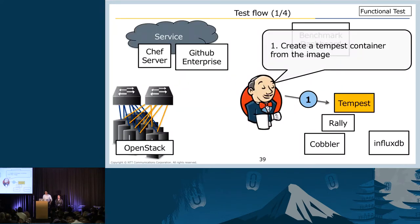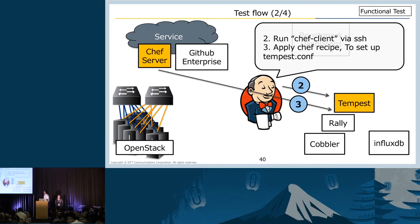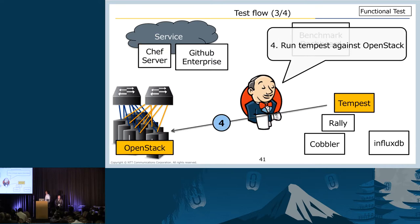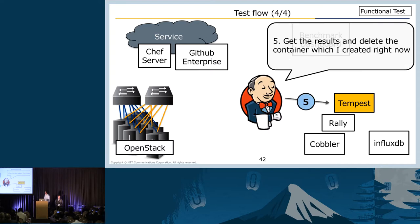Let me explain how we test by showing the flow from start to finish. First, create a Tempest container from the image which I prepared already. The reason for using a container is that we customize Tempest and its packages. Next, to generate a Tempest configuration file fitting our OpenStack, we apply the Chef recipe to the container. Then we run Tempest against OpenStack. Lastly, get the results and delete the container. This ends the functional test.